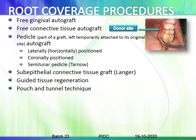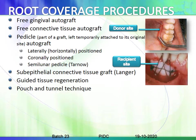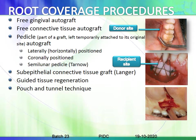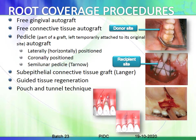The free gingival graft involves taking tissue from the palate and placing it over the recession area; this includes the epithelium, hence the name 'free gingival graft.' The free connective tissue graft involves taking the connective tissue deep beneath the epithelium and placing it over the recipient site, hence the name 'free connective tissue graft.'